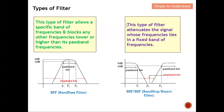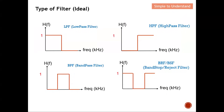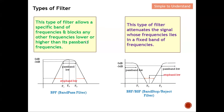The band stop or band reject filter is essentially the reverse process of the band pass filter. Whatever band is specified will be rejected — signals at that band will be attenuated — while the rest will be allowed to pass. This filter attenuates signals whose frequency lies within a fixed band, so all signals outside that band can pass freely. These are the four types of filters: low pass, high pass, band pass, and band stop.